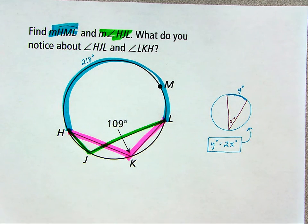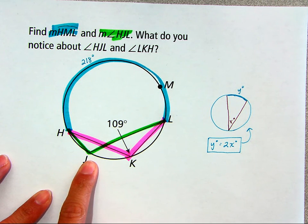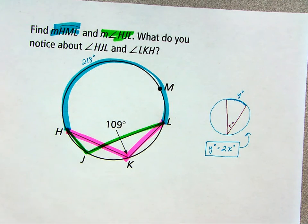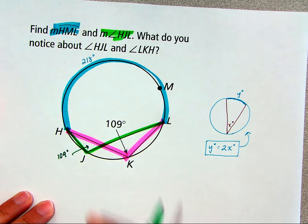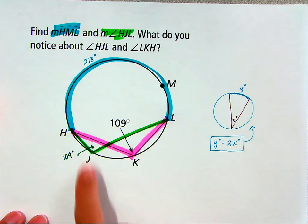So then we can determine, just divide this by two, and we would get that angle HJL is also 109 degrees. Okay, we'll write it in green. 109 degrees, right? Has the same intercepted arc as angle HKL.